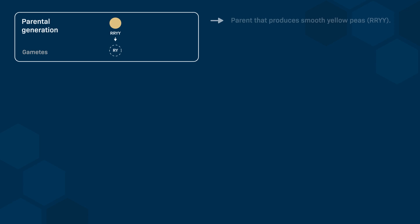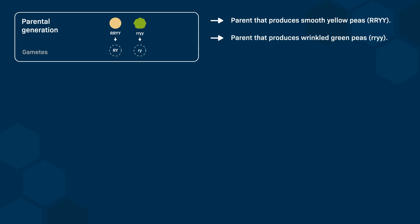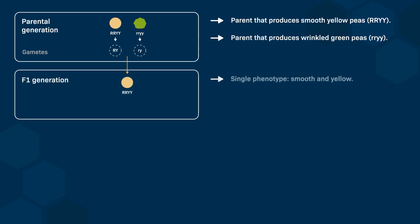In this case, one of the true breeding parents produces smooth and yellow peas (uppercase R uppercase R, and uppercase Y uppercase Y). The other true breeding parent produces wrinkled and green peas (lowercase r lowercase r, and lowercase y lowercase y). The F1 generation is produced from cross-pollination of these true breeding pea plants, and the F1 plants all have the same phenotype: smooth and yellow peas. This shows that these two traits are dominant.